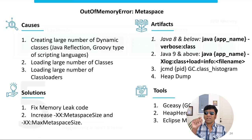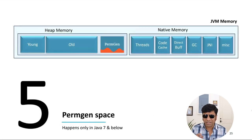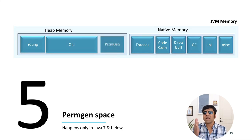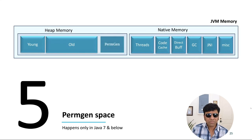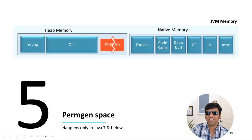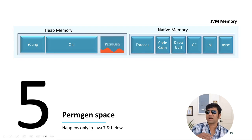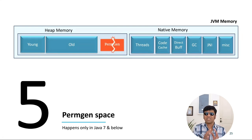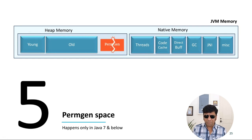Let me also quickly talk about the fifth type of out of memory error, which is PermGen space. PermGen got replaced by metaspace in Java 8. Before Java 8, all your class definitions and metadata definitions required to execute a program were stored in PermGen. But it got replaced by metaspace in Java 8. So when that PermGen gets saturated, you are going to get java.lang.OutOfMemoryError PermGen space. You will not get this type of error when running on Java 8 because it got replaced. But the diagnosis approach you use for diagnosing metaspace is very similar - you can use the same approach for diagnosing a PermGen out of memory error as well.